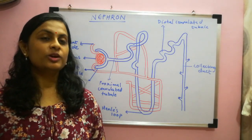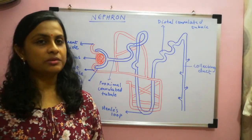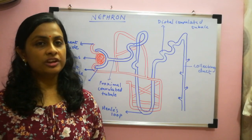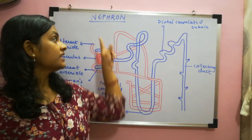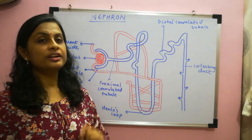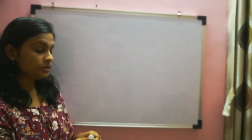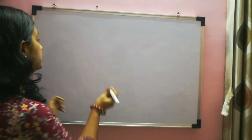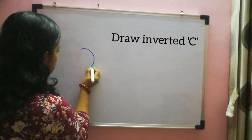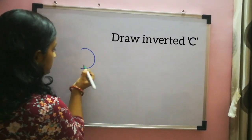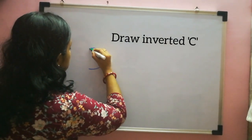Hello everyone, welcome to my channel Science and Me. Today we will learn an easy method to draw the diagram of nephron. So let's start — what you have to do is make an inverted C, now just double this inverted C.